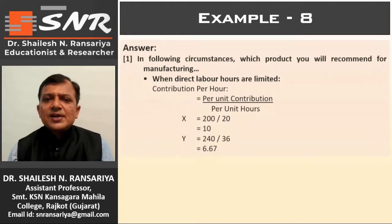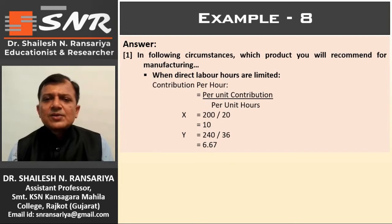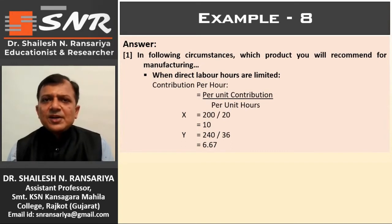Number two: when direct labor is the key factor and labor hours are limited, we calculate contribution per hour. Contribution per hour equals per unit contribution divided by per unit hours. For Product X: 200 divided by 20 hours = rupees 10. For Product Y: total per unit labor cost is 180 and the rate is rupees 5 per hour, so 180 divided by 5 = 36 hours required. Therefore 240 divided by 36.